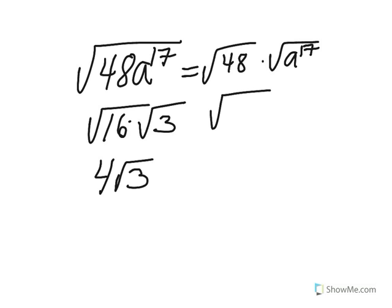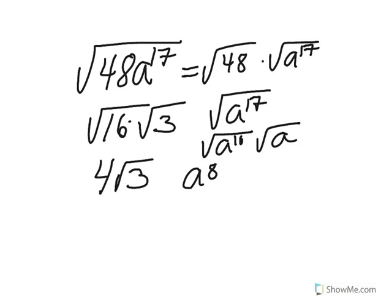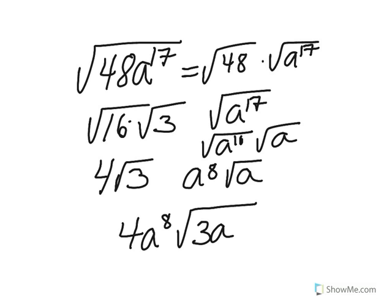Now we need to do the square root of a to the seventeenth. A to the seventeenth can be rewritten as the square root of a to the sixteenth times the square root of a. Dividing 2 into the sixteenth, we get a to the eighth, and we keep the square root of a. Now we can't leave our answer like that — what we do is multiply the numbers not under the radical together, and multiply the numbers under the radical together. It's kind of like a reverse multiplication property of square roots. So our final answer is 4a to the eighth times the square root of 3a.